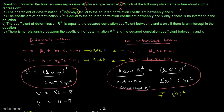Statement b says the coefficient of determination r-square is equal to the squared correlation coefficient between y and x only if there is no intercept in the equation. This is false, because if there is no intercept, the formula gives raw r-square, which is not equal to the squared correlation coefficient.